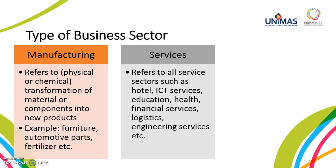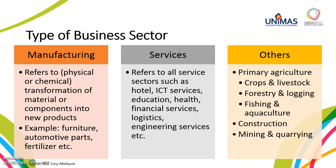Businesses involved in the service industry, such as hotels, mobile phone operators, private tuition centers, banks and logistics companies, are categorized as being in the service sector. The third sector is categorized as other business sector. It consists of three main sectors: primary agriculture, construction, and mining and quarrying. Primary agriculture includes businesses involved in the production of crops and livestock, forestry and logging, and fishing and aquaculture.